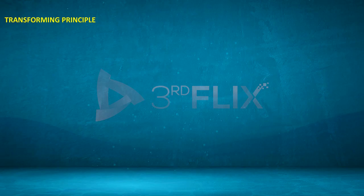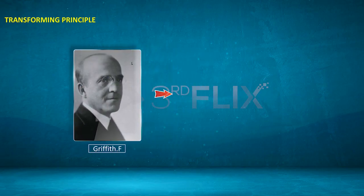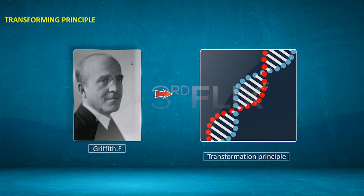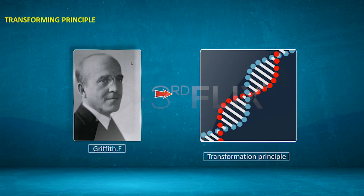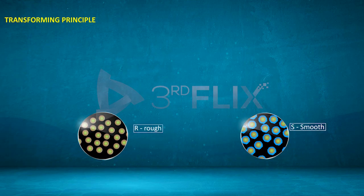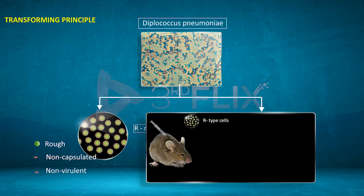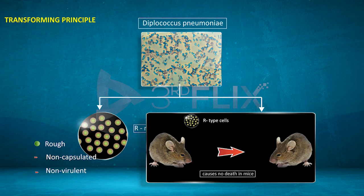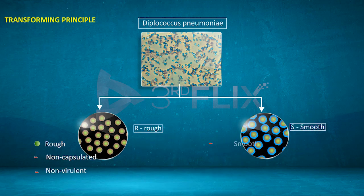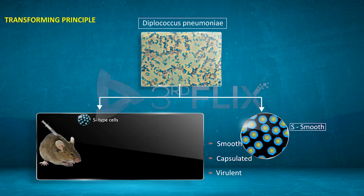Transforming Principle: Griffith conducted an experiment discovering the transformation principle. He worked on Diplococcus pneumoniae of R and S types. R is a rough, non-capsulated and non-virulent form; when injected into mice, it causes no death. S is a smooth, capsulated and virulent form; when injected into mice, it causes death.